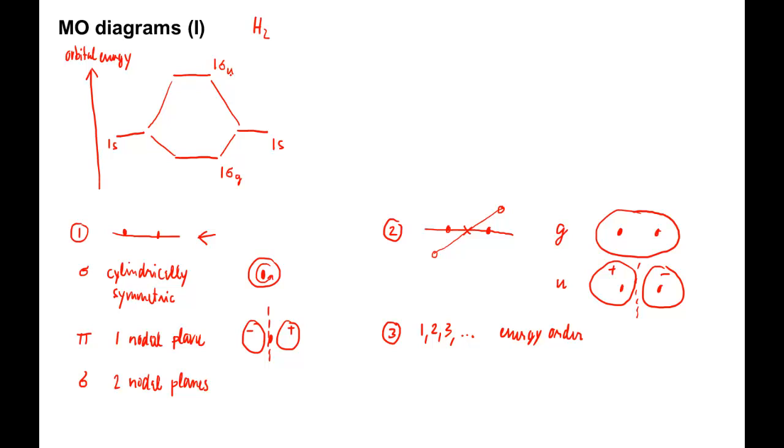Lastly, we often add an asterisk superscript to antibonding MOs to indicate that they are antibonding. The asterisk is often omitted.